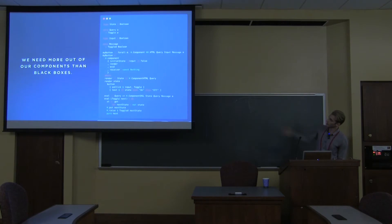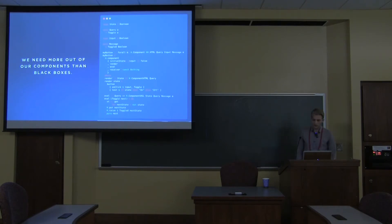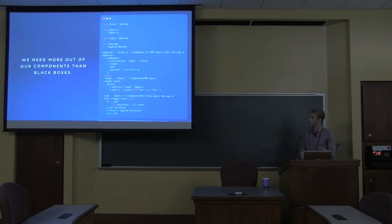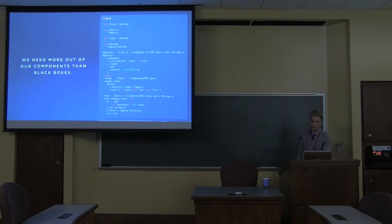This is the first halogen component you'll probably ever write if you go through the halogen guide. It's a button that toggles on and off, and the toggling just changes what the text is. We see the key parts of halogen here: the state, which is private and just a boolean; our behavior, represented with a query and the eval function; and a private rendering function that takes that boolean state and renders some text and a button. When you click the button, the toggle query is raised, the eval runs — that's a very quick crash course in how a halogen component looks.